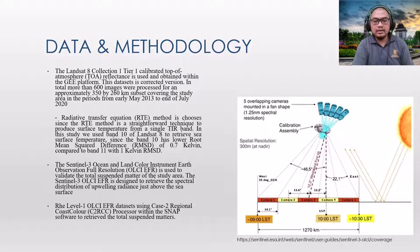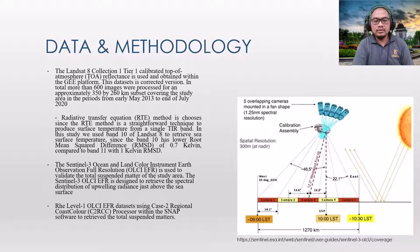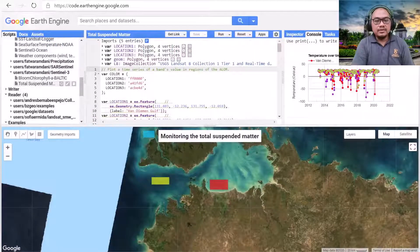Furthermore, Sentinel-3 Ocean and Land Colour Instrument Earth Observation Full Resolution (OLCI EFR) was used to validate the total suspended matter of the study area. The Sentinel-3 OLCI EFR is designed to retrieve the spectral distribution of upwelling radiance just above the sea surface. The Level 1 OLCI EFR datasets were processed using the Case 2 Regional Coast Colour (C2RCC) processor within the SNAP software to retrieve the total suspended matter.